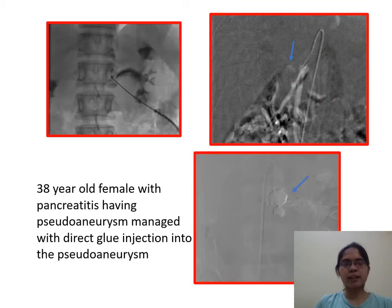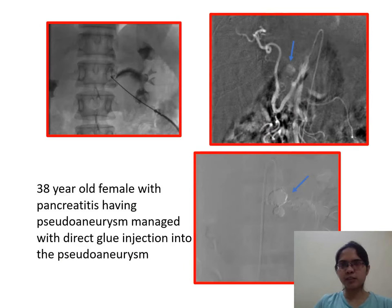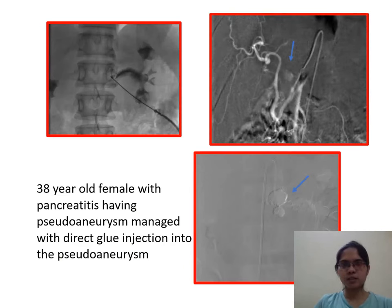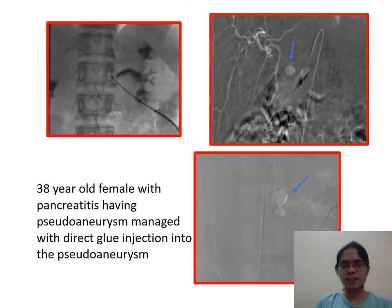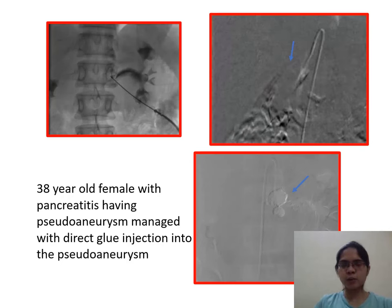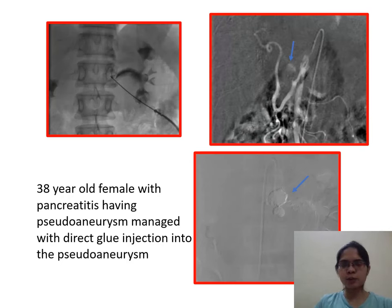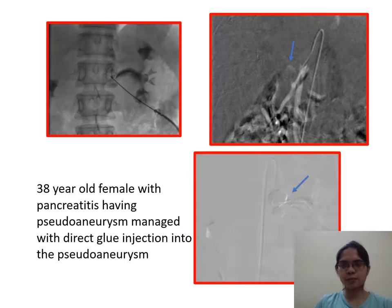Case 3: A 38-year-old female with pancreatitis presenting with a pseudoaneurysm, which was managed with direct glue injection into the pseudoaneurysm.